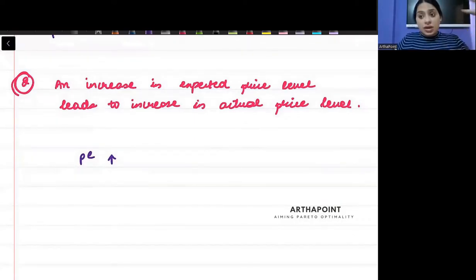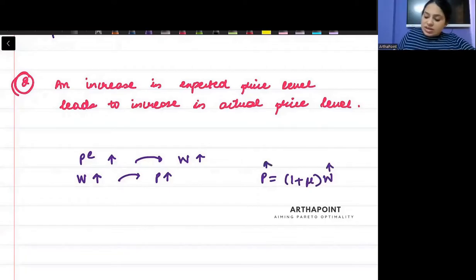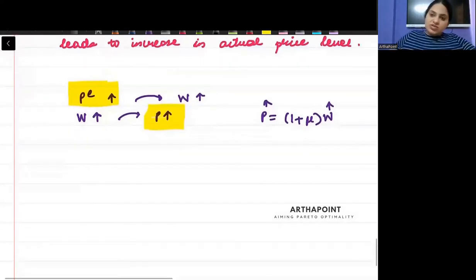If I think price will increase in the future, won't I go ahead and ask for higher wages? If wage will increase, then price will automatically increase because what is my price setting relation? P is equal to 1 plus mu W. So if W will increase, P will increase. So increase in P E leads to increase in P.